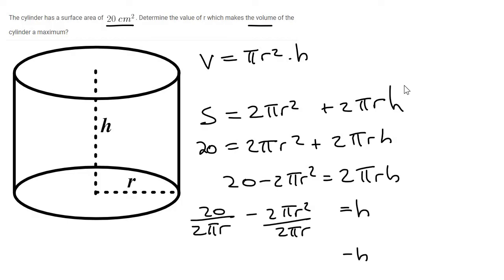Okay, and then you just want to simplify a little bit. So 20 divided by 2 is 10, so it'll be 10 over πr. This 2 cancels, the π's cancel, and the r's cancel, so there will be one r left over at the top. And so this is what h is equal to.